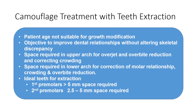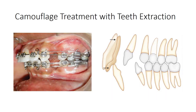The ideal teeth for extraction are the premolars. First premolars are extracted if more than 5 mm of space is required, whereas second premolars are the teeth of choice if 2.5 to 5 mm of space is required. The extraction spaces are used for overjet reduction, overbite reduction, and correction of all crowding and local irregularities.